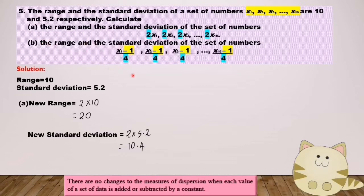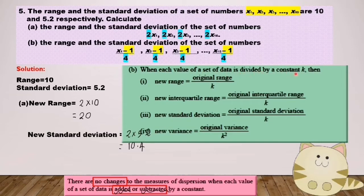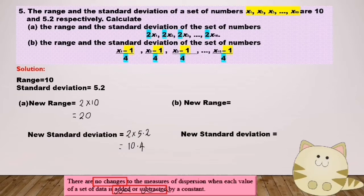For question B, we compare to the original set of data and find that each data is minus 1 and divided by 4. There are no changes to the measure of dispersion when each value of a set of data is added or subtracted by a constant, so we ignore the minus 1. When each value is divided by a constant k, the new range equals original range divided by k, and new standard deviation equals original standard deviation divided by k. The constant is 4, so new range equals 10 divided by 4 equals 2.5, and new standard deviation equals 5.2 divided by 4 equals 1.3.